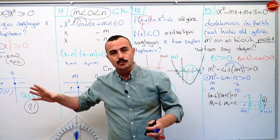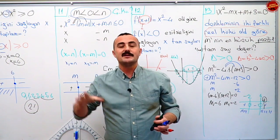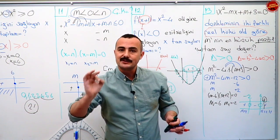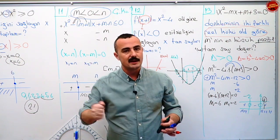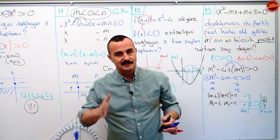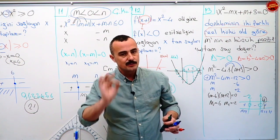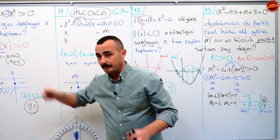Şimdi daha farklı sorular var. Ondan sonra delta'nın sıfıra eşit olduğu durum, çift katlı köklerde neler yapacağız onlara bakacağız. Sırasıyla gidiyoruz, tüm ayrıntısıyla ele alacağız. Hadi devam.